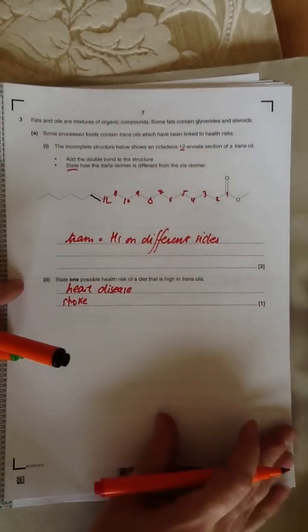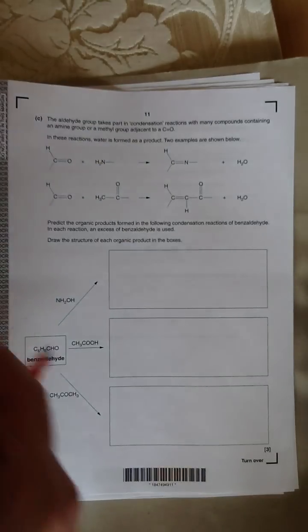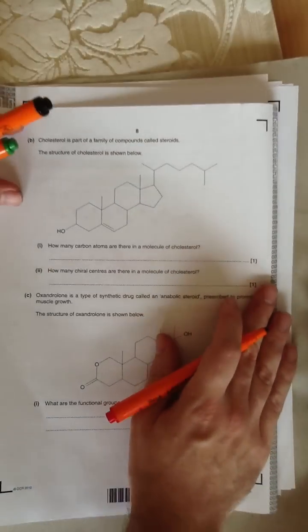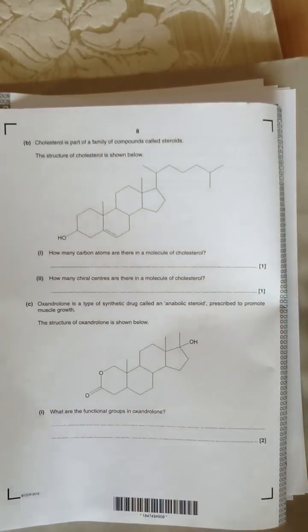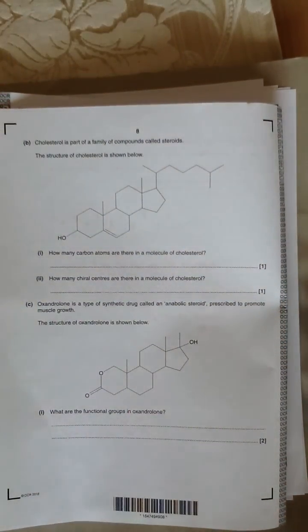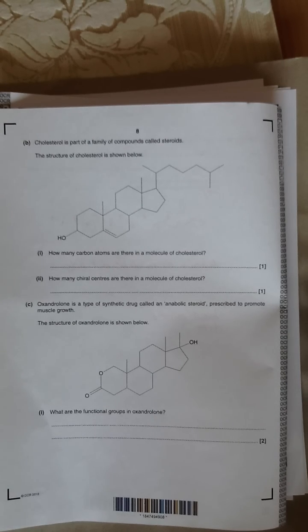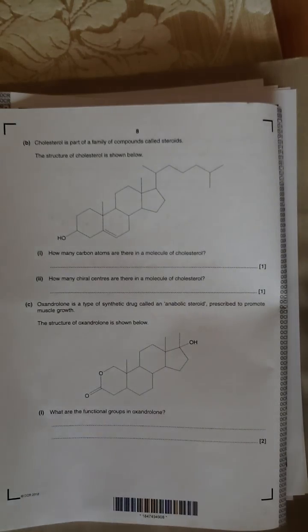The question goes on to talk about cholesterol. It says cholesterol is part of a family of compounds called steroids. The structure of cholesterol is shown below. How many carbon atoms are there in a molecule of cholesterol? We have to go through and count them one by one.